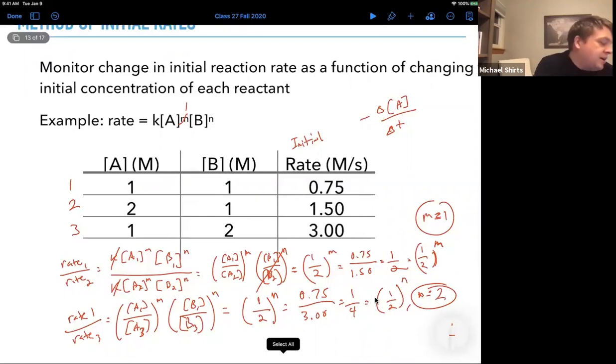So we have that the rate law is k times A to the one B to the two. And now from that, we can plug into one of the other equations and get what k is.